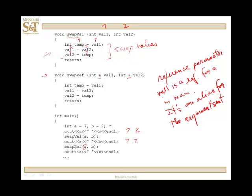So whatever happens to val1 in this function, that's going to happen to a back in the calling function in main. Again, you can think of a and b now, not the values, but the variables themselves being sent to these parameters.